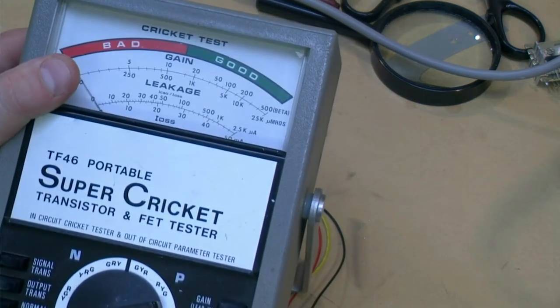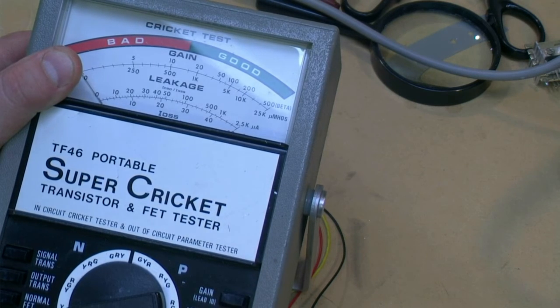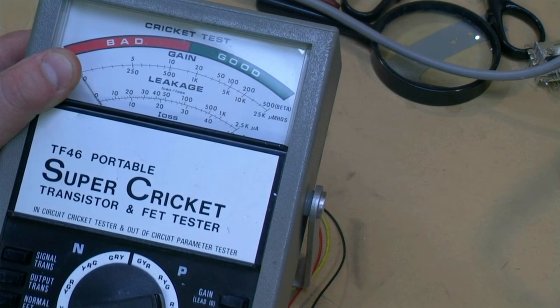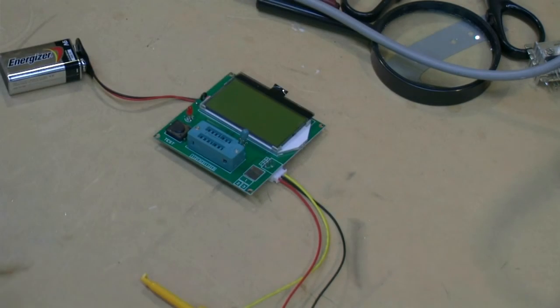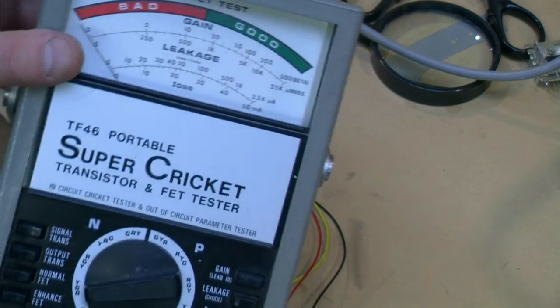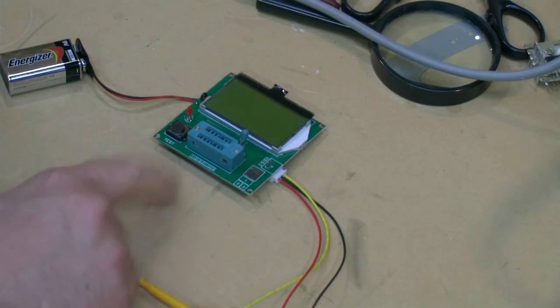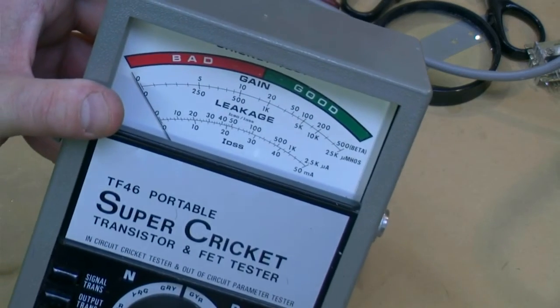It also replaces my TF46 Super Cricket because this one will give me lead identification. This one doesn't. It gives me good and bad and tells me leakage or gain, but I think this is a lot more versatile. And again this cost me a hell of a lot more money than that.